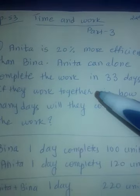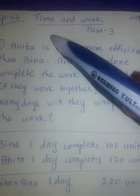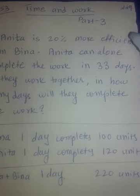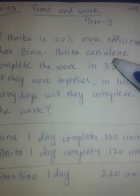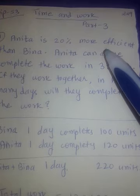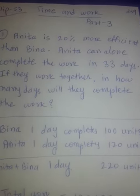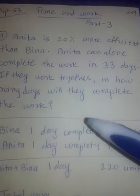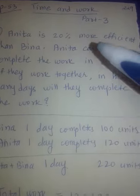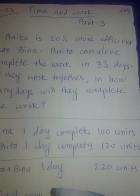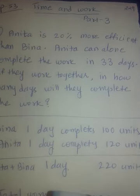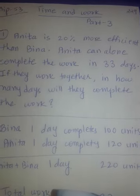Today we are going to do questions based on efficiency in the chapter Time and Work. Many times you must have read the word efficiency — for example, 'A is twice as efficient as B.' So let's understand what that means. By common sense, if A is more efficient than B, A works faster. That means the time required for A will be less than the time required for B to finish a particular work.